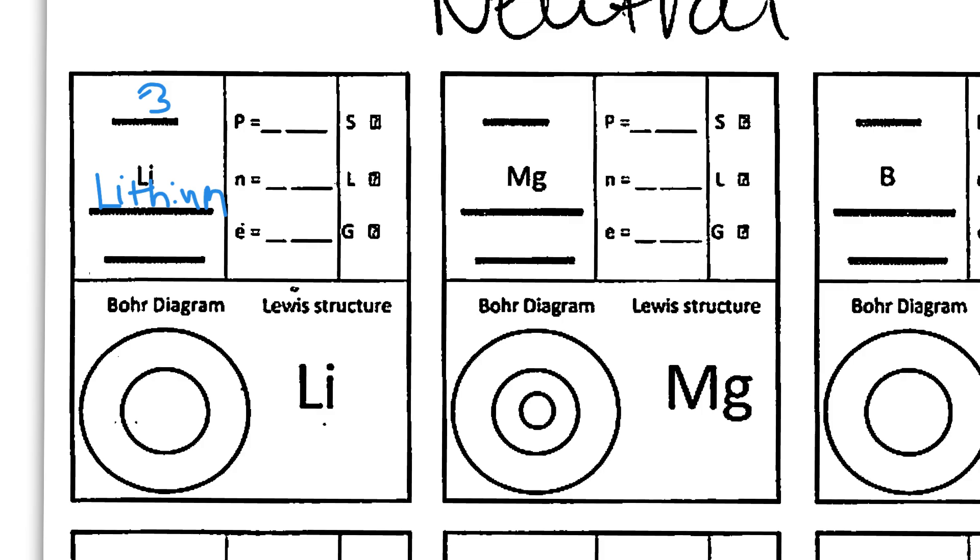Basically, the cheat sheet, right? Then we're going to take our mass number for lithium, which is 6.938. Your periodic table may be a little bit different, depending on how they round that number, but that should be pretty close.